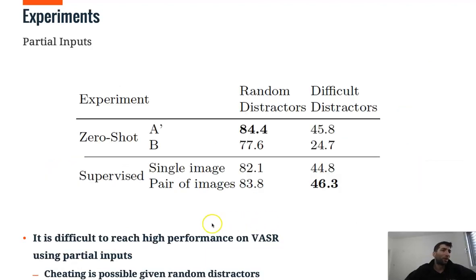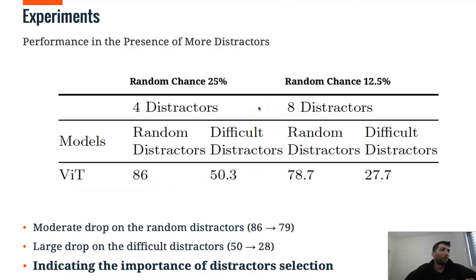which is 90%. We also experiment with partial inputs. Where we show that this is difficult to reach high performance on VASR using partial inputs.